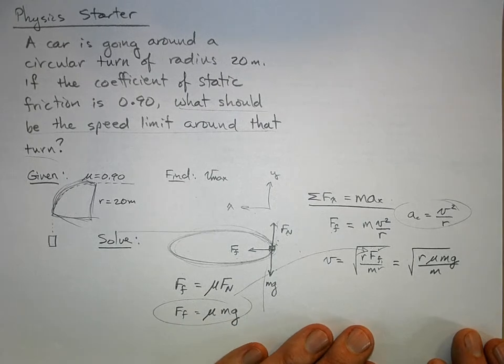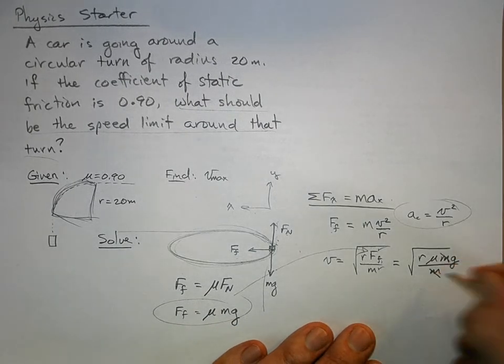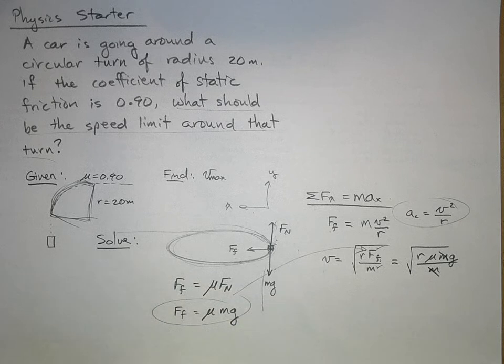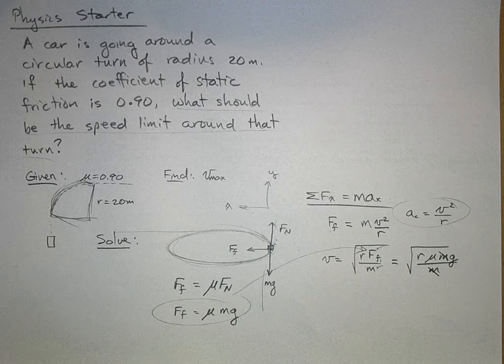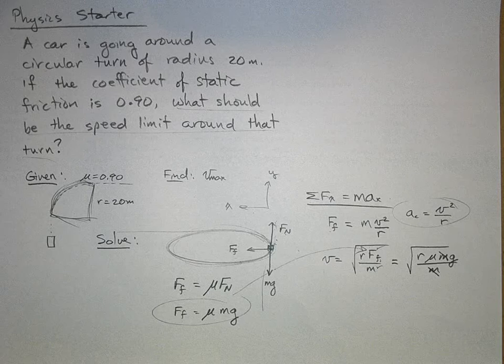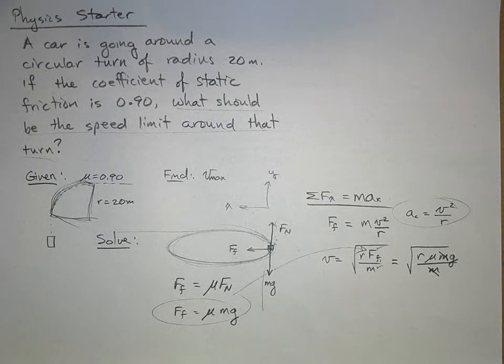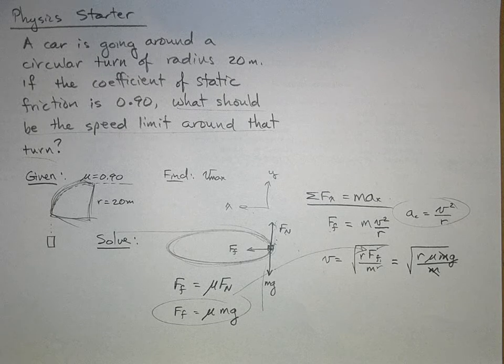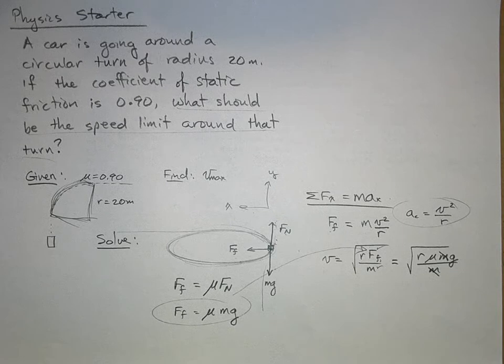We have r times the force of friction which is mu mg divided by m. What do we see happens to m? The mass of the car cancels out, which is why when you go around a turn there's not different speed limits for different masses of car. If I drive my little Toyota Prius around a turn it's going to be the same speed limit as my Honda Odyssey. If you exceed that maximum speed no matter what the mass, you will skid off the road.